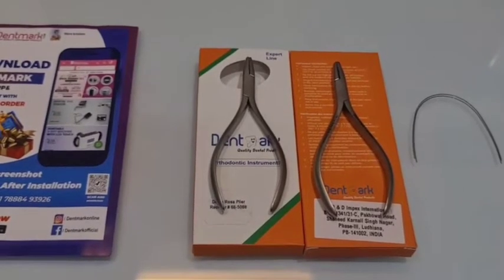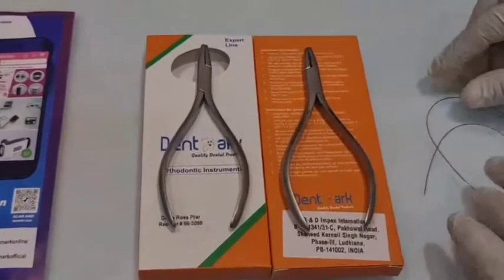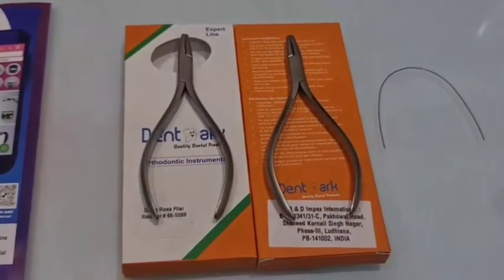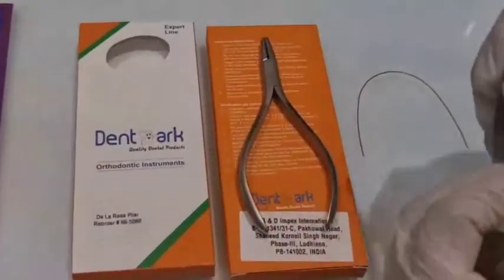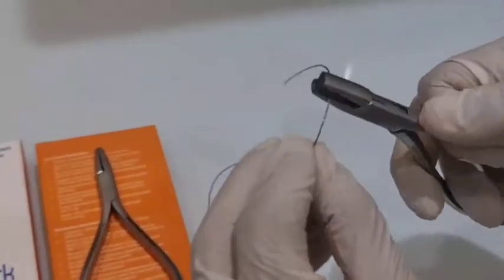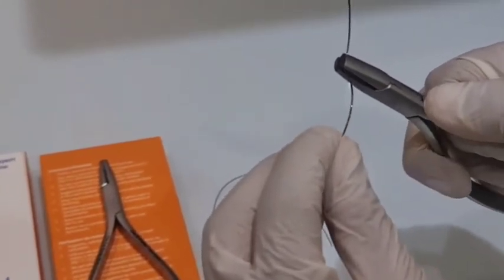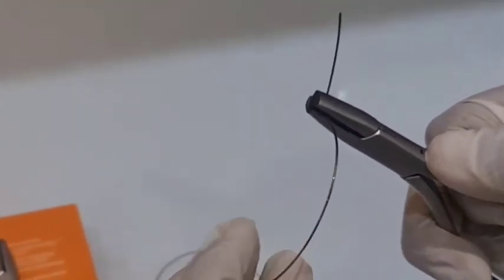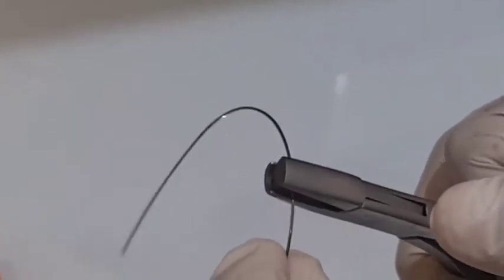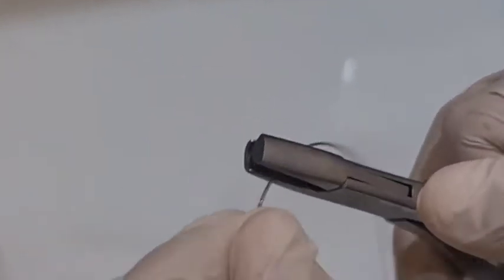Now let's see how they function on the wires. These are the wires on which we are going to perform the contouring. Slightly secure the wire in the mouth of these pliers and just slightly press them. This is going to give a smooth contouring to the wires without torquing them.